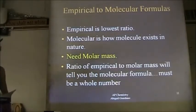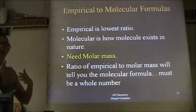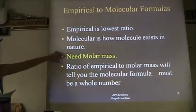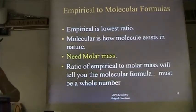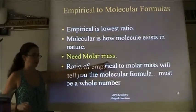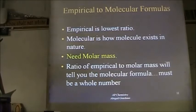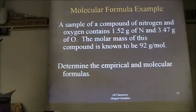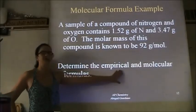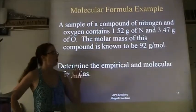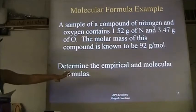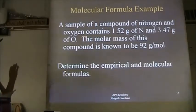The purpose of finding an empirical formula is that it's the step you need to get to the molecular formula. The biggest point here: in order to get from the empirical to the molecular, you must be given the molar mass. You can't get from one to the other without knowing that. Given a problem similar to the last one — find both the empirical and the molecular. Use the data to find the empirical first, then stop.